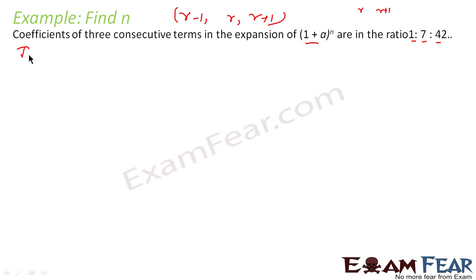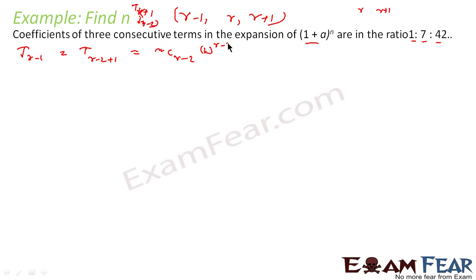When I say T(r-1), I can also write this as T of (r-2)+1. This is because we have the formula for T(k+1), so here k equals r minus 2. So T(r-2+1) is nothing but nC(r-2) into 1^(r-2) into a^(n-(r-2)). Since 1 to any power is always 1, the coefficient is nC(r-2).